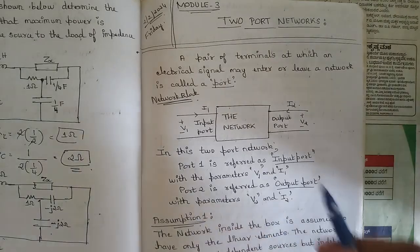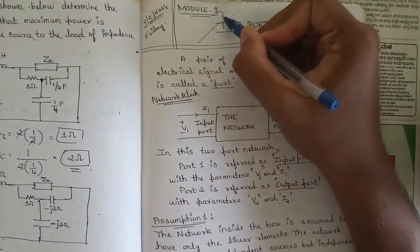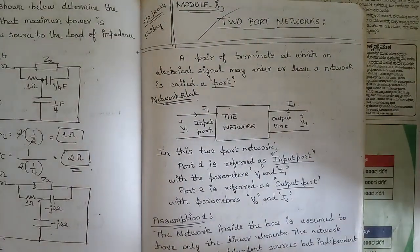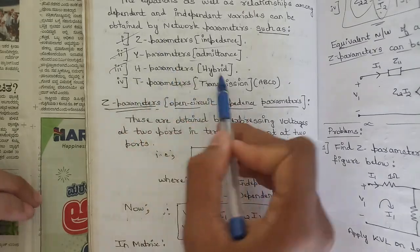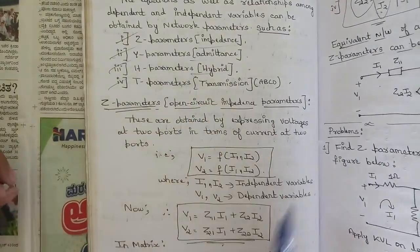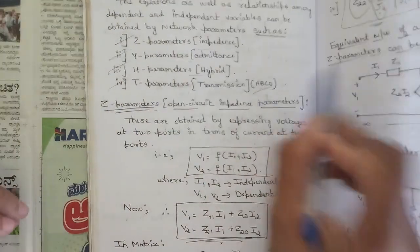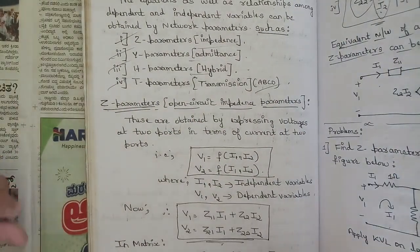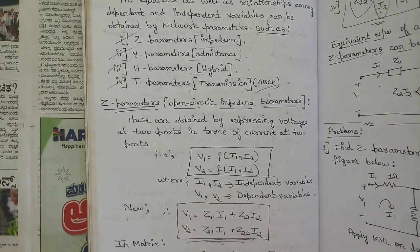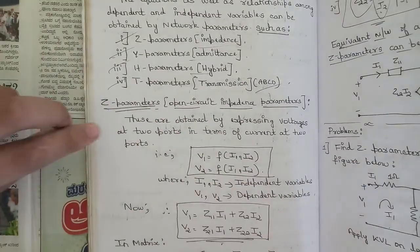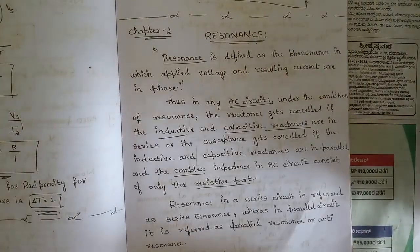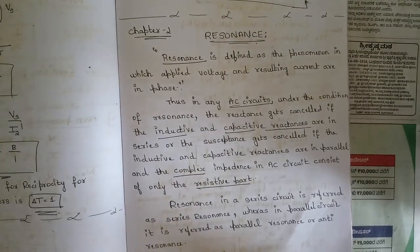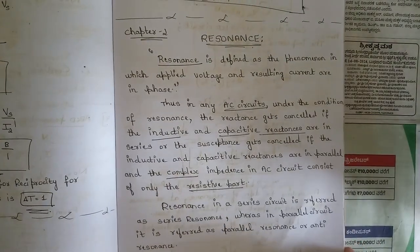Module three covers two-port networks — actually module five. Here we deal with Z parameters (impedance), Y parameters (admittance), H parameters (hybrid), and T parameters (transmission), also called ABCD parameters. Questions on conversion of one parameter set into another will be asked — for example, representing Z parameter equations in terms of H, Y, and T parameters.